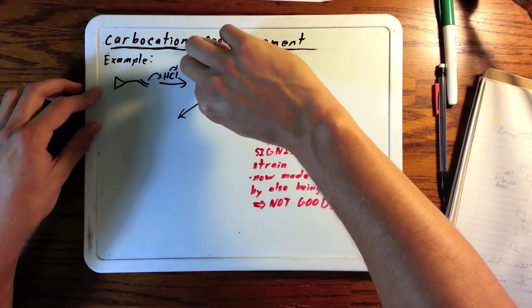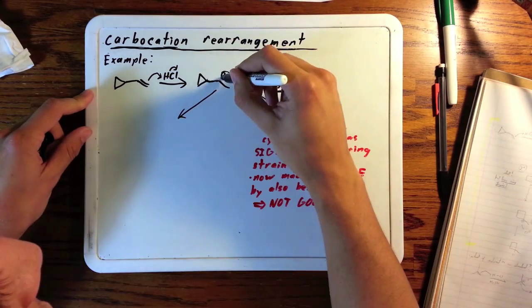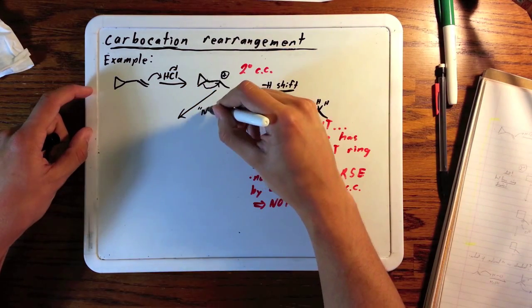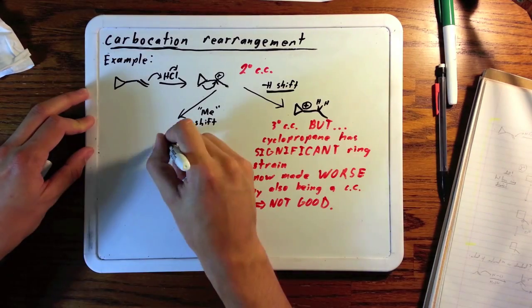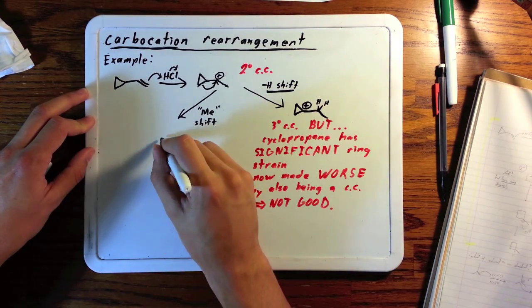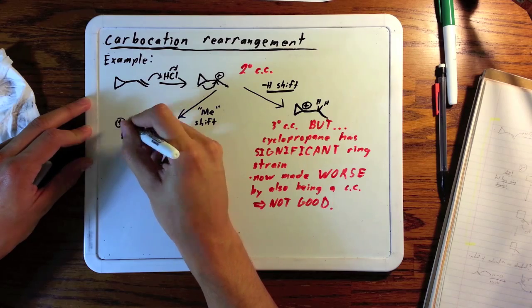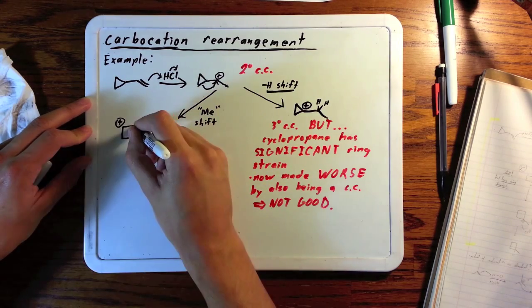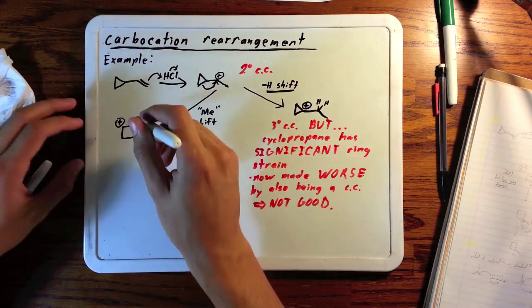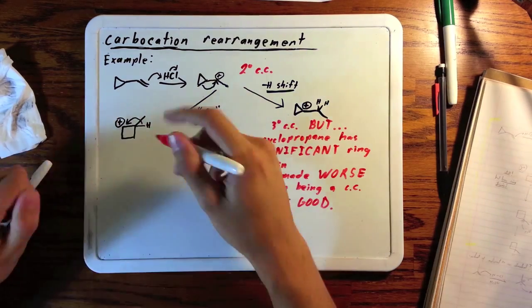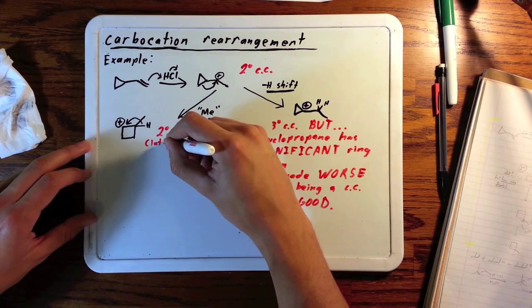Here's another option. Just like we saw before, a carbon-carbon bond from the alpha to beta positions next to the carbocation is going to break and move with the electrons over to the carbocation to create a new carbon-carbon bond. Doing this gives us a four-membered ring instead of a three, which is less strained, and it creates a new secondary carbocation.